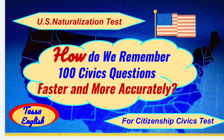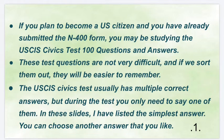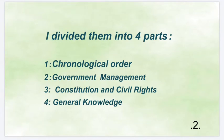U.S. Naturalization Test. How do we remember 100 civics questions faster and more accurately for the Citizenship Civics Test? If you plan to become a U.S. citizen and have already submitted the N-400 form, you may be studying the USCIS Civics Test 100 Questions and Answers. These test questions are not very difficult, and if we sort them out, they will be easier to remember. The USCIS Civics Test usually has multiple correct answers, but during the test, you only need to say one of them. In these slides, I have listed the simplest answer. You can choose another answer that you like. I divided them into four parts.